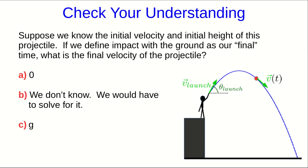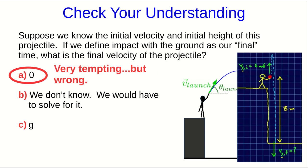Let's look at A. It seems very plausible, doesn't it? The ball is going to hit the ground and it's going to stop, so surely the final velocity will be zero. So it's very tempting, but unfortunately it's wrong because that's not what we mean by the final velocity.